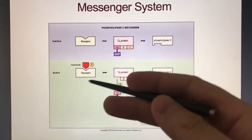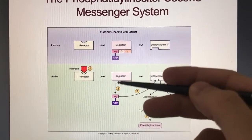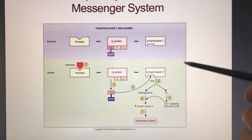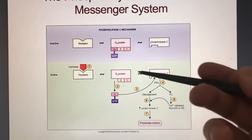So your hormone binds a receptor in one. And then this is going to be your GQ protein. The other one was a GS subunit.